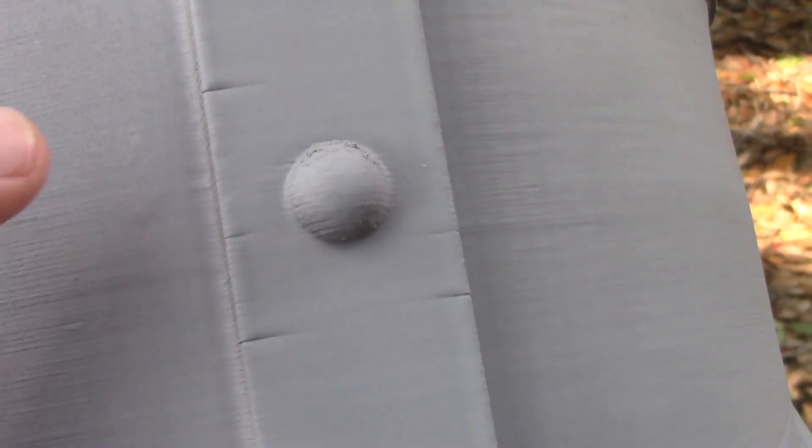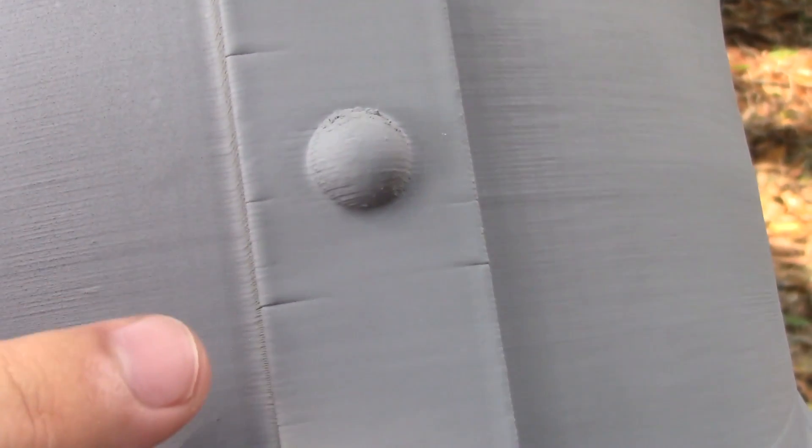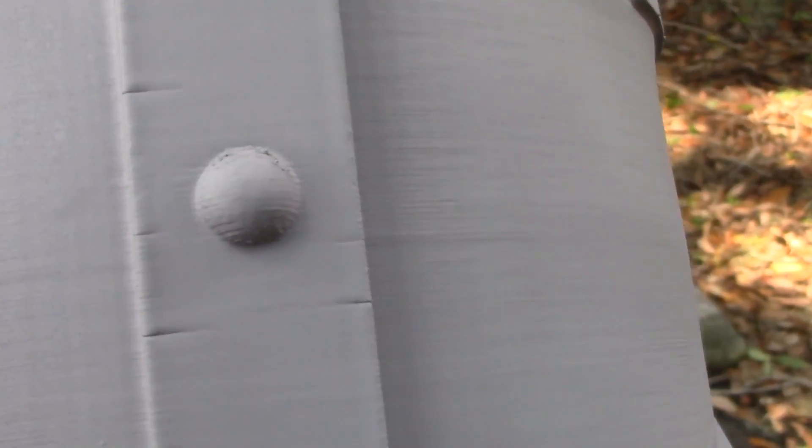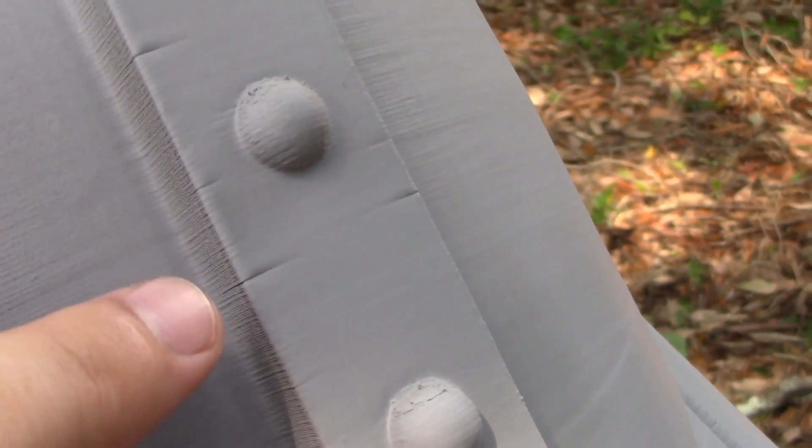If we go up here, I was hoping that the filler primer would fill in some of these very small gaps. I purposely did not put wood filler or any ABS slurry in these to see how the filler primer would work, and it doesn't seem to fill in those cracks. But we'll see how it is after I sand it.